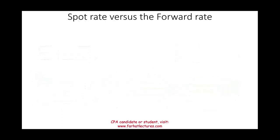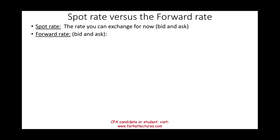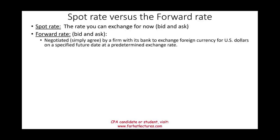Let's discuss the spot rate versus the forward rate. The spot rate is the rate at which you can exchange currency right now — there is a bid and an ask. If you're at the airport and want to buy or sell a currency, the rate at that moment is the spot rate. The forward rate is negotiated — it's an agreement between a firm and its bank to exchange foreign currency for USD on a specified future date at a predetermined exchange rate.